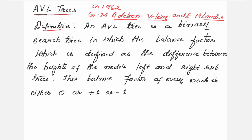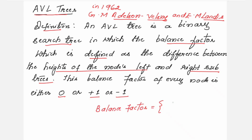An AVL tree is a binary search tree in which the balance factor — defined as the difference between the heights of the node's left and right subtrees — of every node in the tree should be either 0, plus 1, or minus 1.